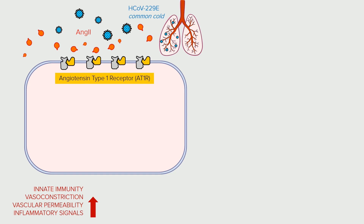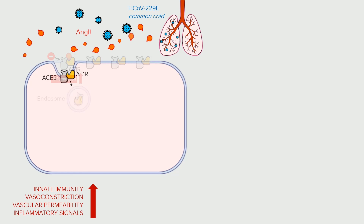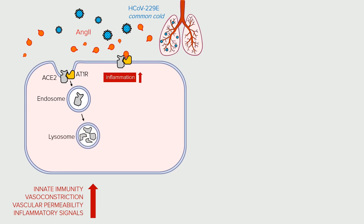AT1R does two things. It binds to ACE2 and inactivates its enzymatic activity, and it serves as a receptor to ANG2, promoting more inflammatory responses. The two proteins are then endocytosed. AT1R leaves the endosome and returns to the cell membrane to capture another ACE2, causing more inflammation. At the same time, the endocytosed ACE2 reaches a lysosome where it is degraded — so there is nothing to stop further inflammation.